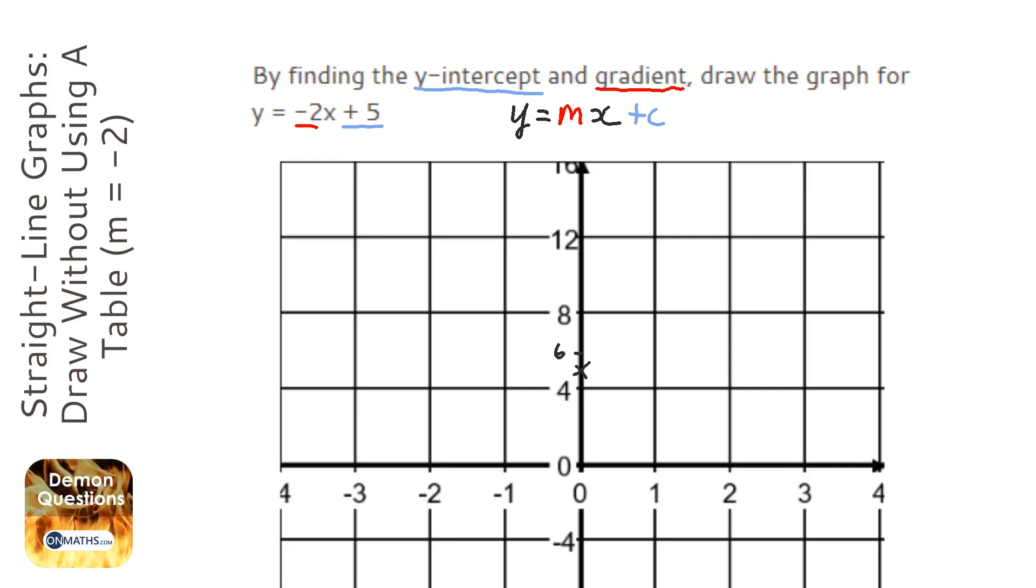And the y-intercept tells us for every 1 we go to the right, how far we go up. Now this is a bit interesting because we go 1 to the right here, but because it's minus 2, we're not going to go up 2, we're going to go down 2. So we're going to go here to about 3.